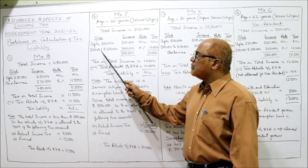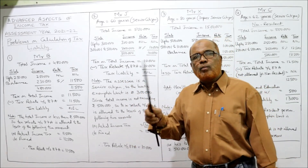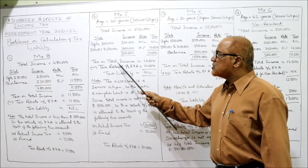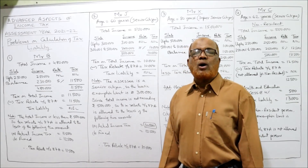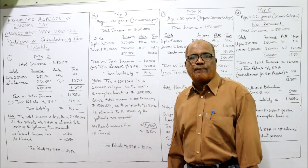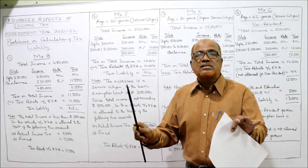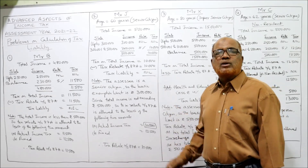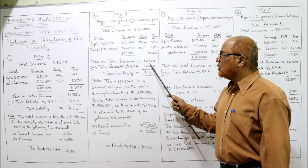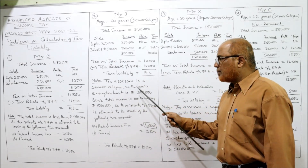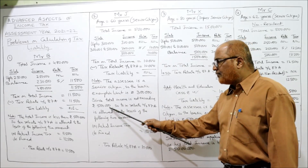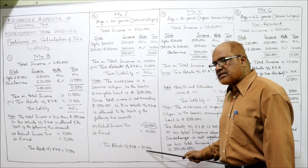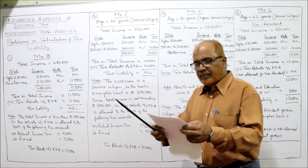Up to ₹3,00,000 income, tax rate is nil. The next slab goes from ₹3,00,001 to ₹5,00,000 — that's ₹2,00,000 of income at 5%, giving ₹10,000. Tax on total income: ₹10,000. Tax rebate is allowed because the income is up to ₹5,00,000 — not more than ₹5,00,000. Tax rebate under section 87A: least of actual income tax ₹10,000 or fixed ₹12,500 — so ₹10,000 is allowed. Tax liability is nil. Note: senior citizen, basic exemption ₹3,00,000, rebate allowed since income does not exceed ₹5,00,000.